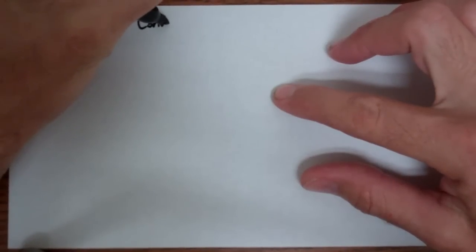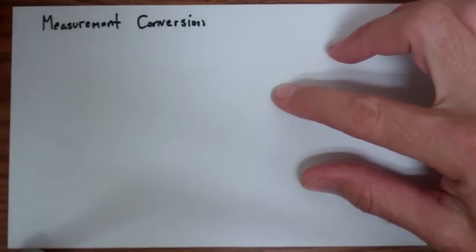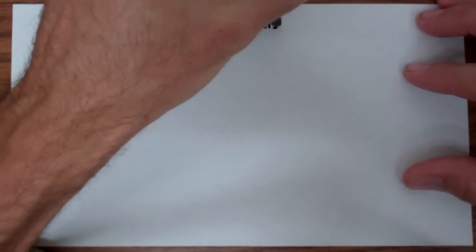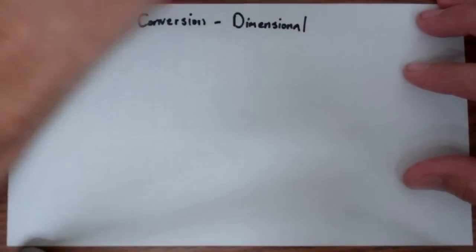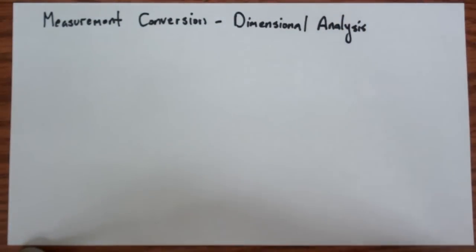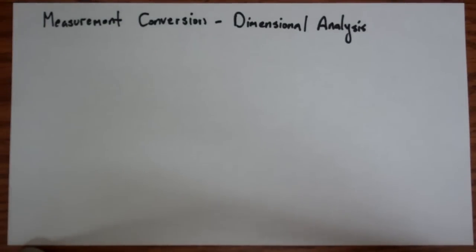Okay, so this is Professor Gilmett, and we are going to talk today about measurement conversion. One of the ways that we talk about measurement conversion, and we use it in the sciences, is we call it dimensional analysis. Dimensional analysis just means we are going to use a fraction to help us match up the units and get the conversion in the correct place.